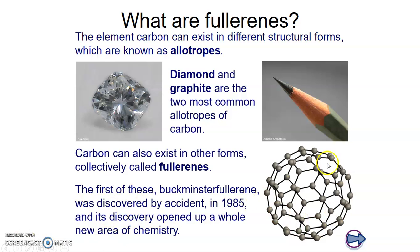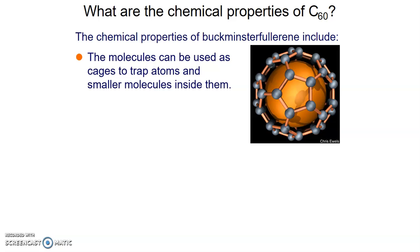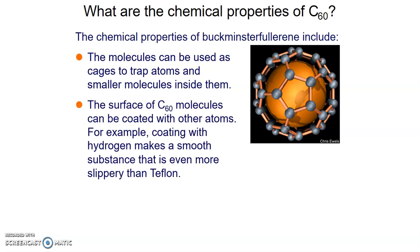That is a picture of a buckminster fullerene molecule. You can see it's made up of hexagons - six-sided shapes - of carbon atoms joined together to make a ball or sphere. The chemical formula of buckminster fullerene is C60, so in one of those spheres there are 60 carbon atoms. This made it very useful and interesting to scientists. Because the molecules are hollow, they can be used to trap atoms and other smaller molecules inside them, and their surfaces can be coated with other atoms, which can make them very useful.